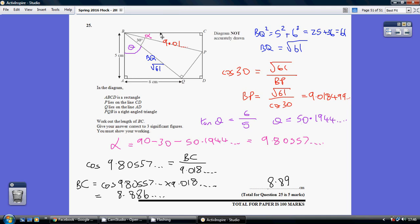So now I'm fully armed to work out what BC is. I know the angle. I know the hypotenuse. I want the adjacent. So cos 9.80557 equals BC over 9.018. Multiply both sides by 9.018. I get BC being cos 9.80557 times 9.018, which is 8.886 rounding to 8.89.